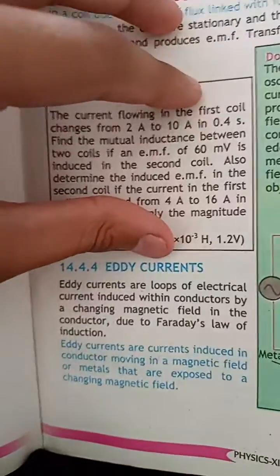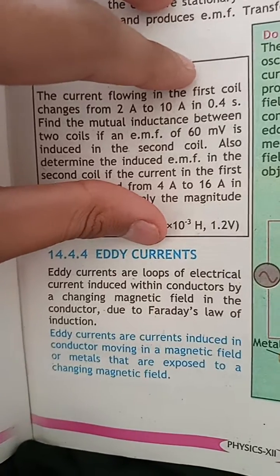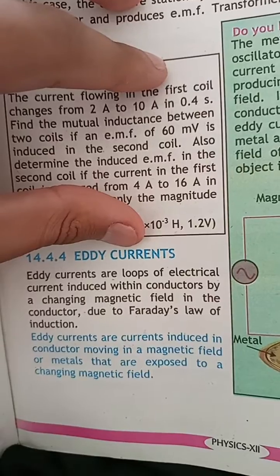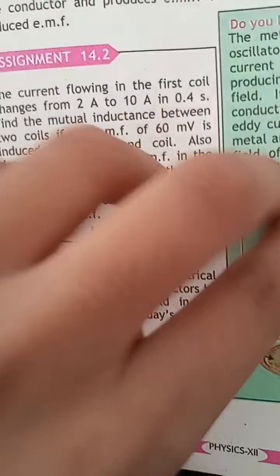Eddy Currents are a loop of electrical current induced within the conductor by changing the magnetic field in the conductor due to Faraday's law of induction. Eddy Currents are currents induced in the conductor moving in the magnetic field, or metal that is exposed to a changing magnetic field.